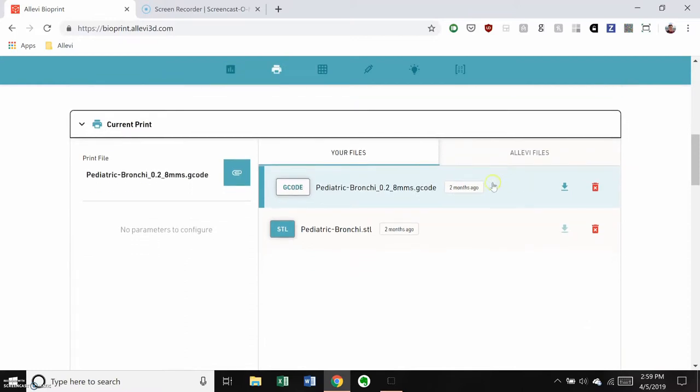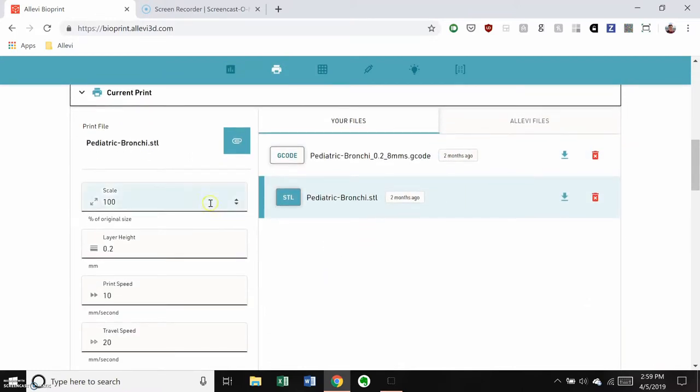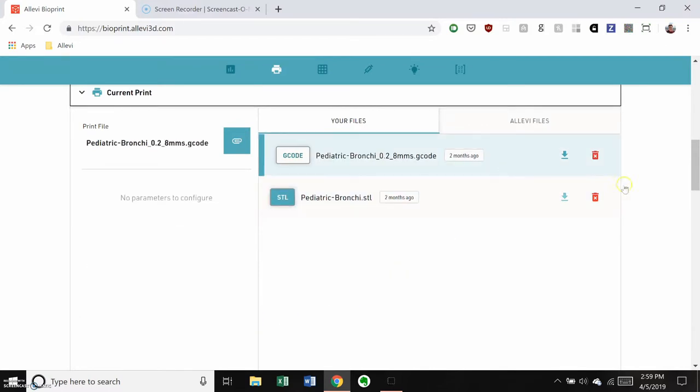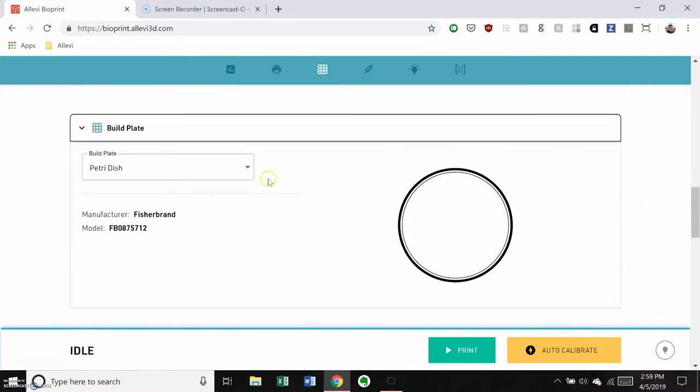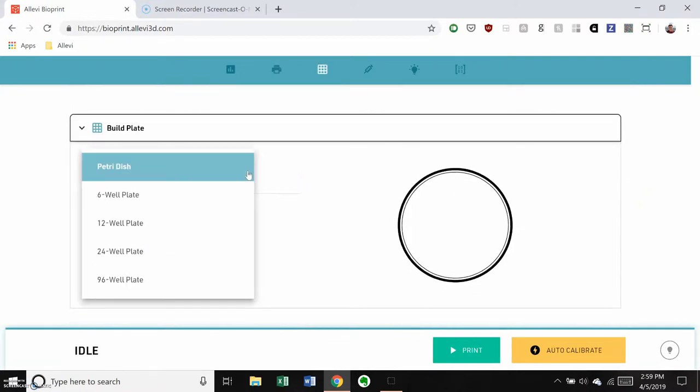This will be printed with a pre-made gcode file, but you can also slice an STL using these parameters. For this print we'll use a petri dish, although you can use any of our well plate settings.